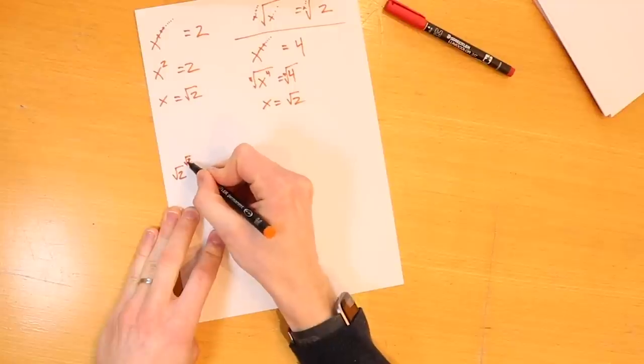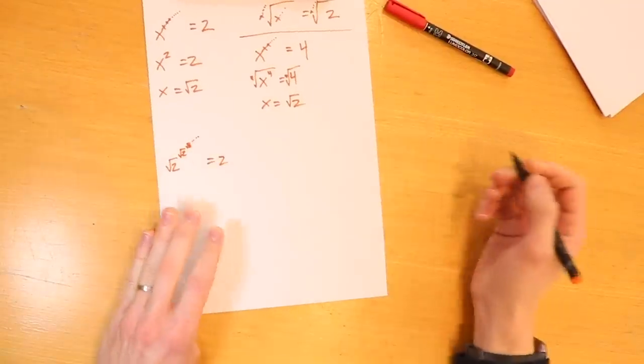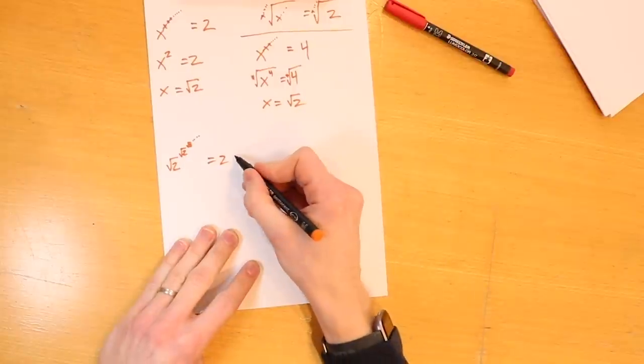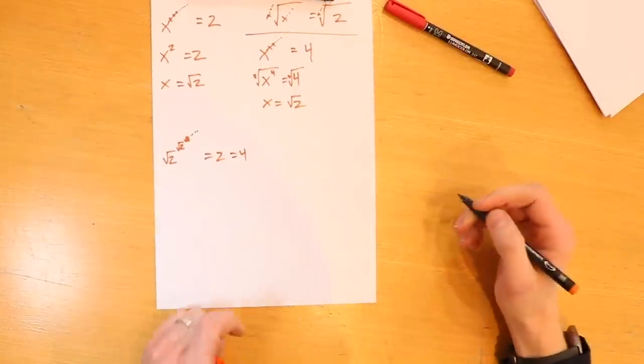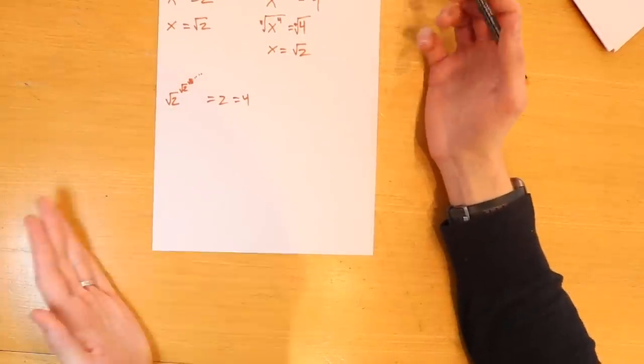Right. So that doesn't seem to make sense. Because what it seems to say is if we take root two to its own power, to its own power, on and on and on, that that equals two, right? Yes. But it also seems to say that that equals four. So I've probably done something I'm not allowed to do. Right. So when you're dealing with an infinite process like this, it's important to be very clear on exactly what you mean.